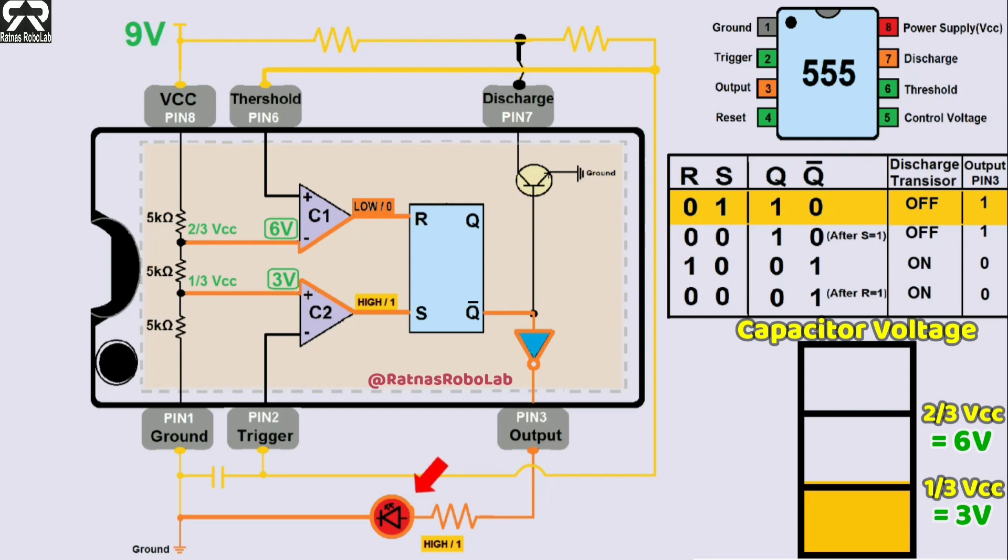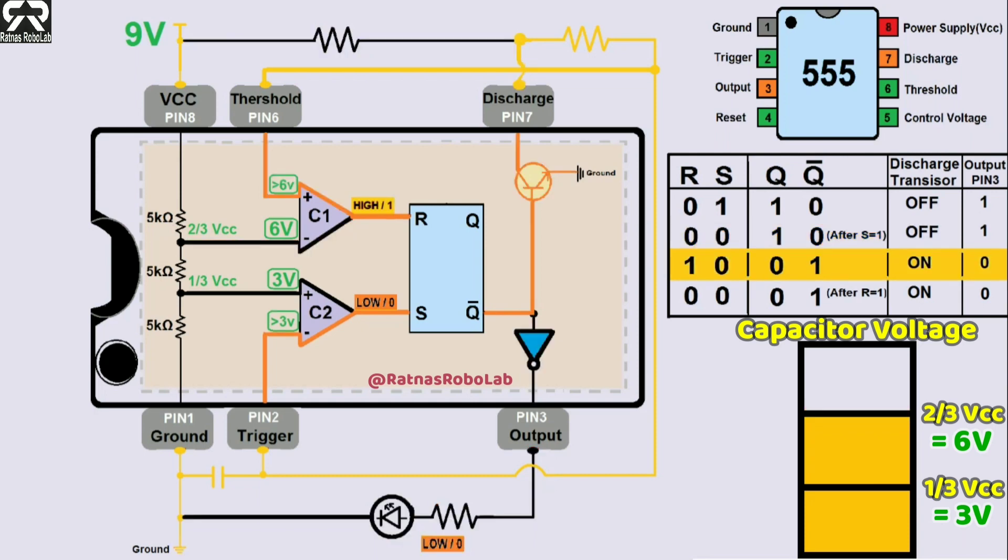This cycle of capacitor charging up to above 2/3 Vcc, turning the LED off and draining back down to below 1/3 Vcc, turning the LED on will continue as long as the circuit is connected with the power supply.